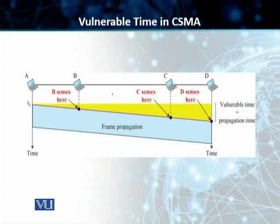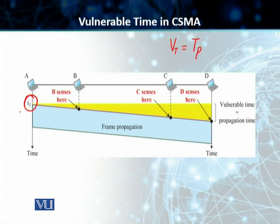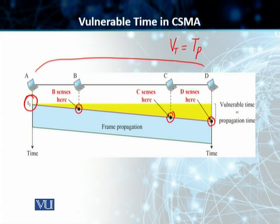The vulnerable time for CSMA is equal to the propagation time TP. TP is the time needed for a signal to propagate from one end of the medium to the other. If at time T1, station A starts sending a frame, then B, C, and D sense it at progressively later times. If any of them find the medium idle during that window, they start transmitting and a collision occurs. The total propagation time from A to D is the vulnerable time. We need to wait for that much time before any other station starts transmitting in CSMA, otherwise we will end up with a collision.